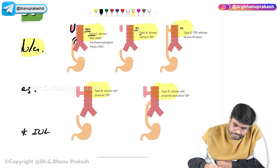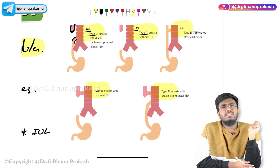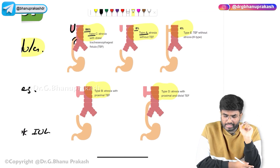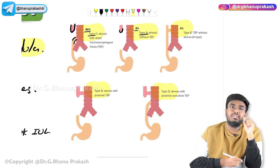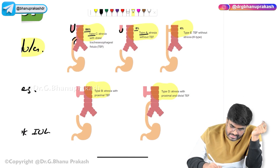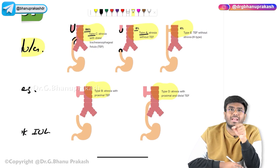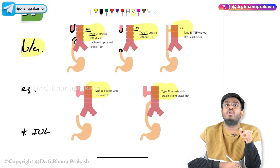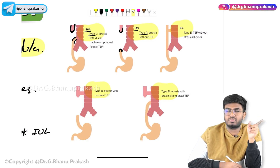In Type A, a rare variety at 8% of cases, there is atresia in the proximal segment as well as the distal segment, but there is no fistula formation. So in Type A tracheoesophageal fistula, there is no abnormal connection at all.